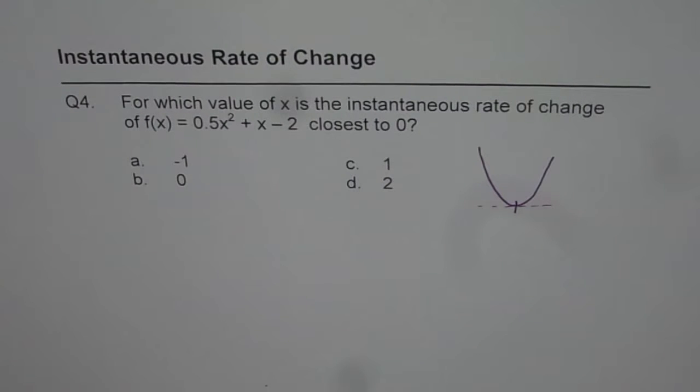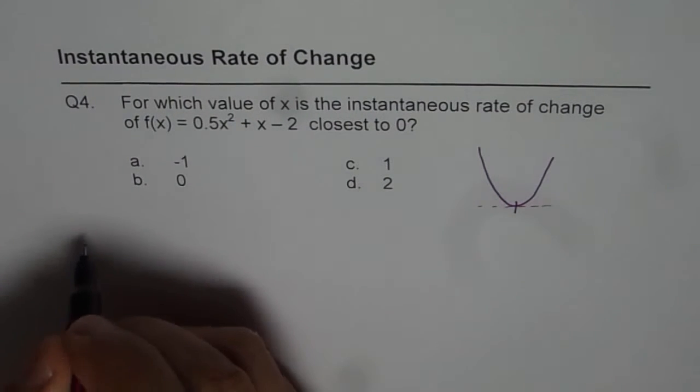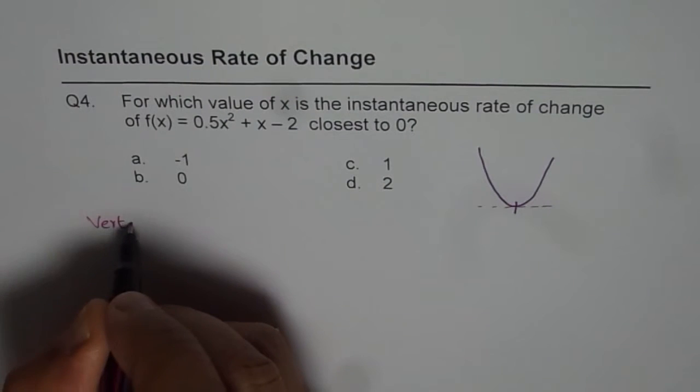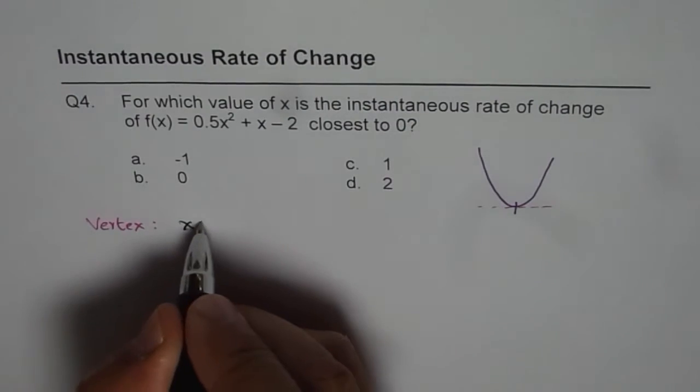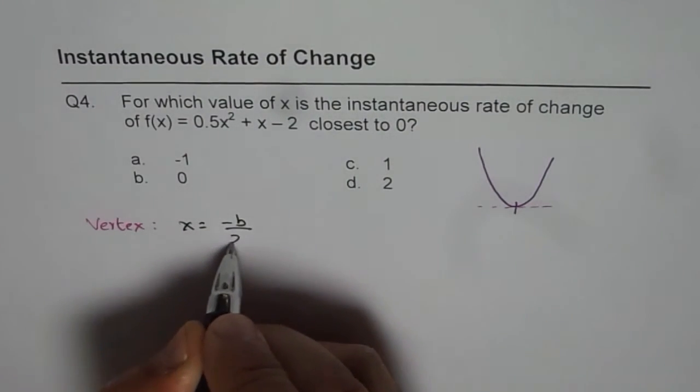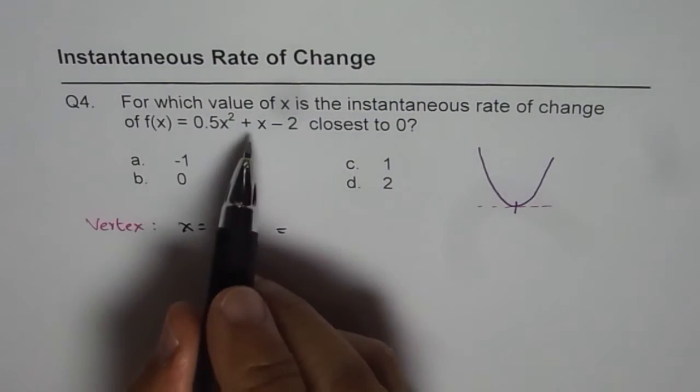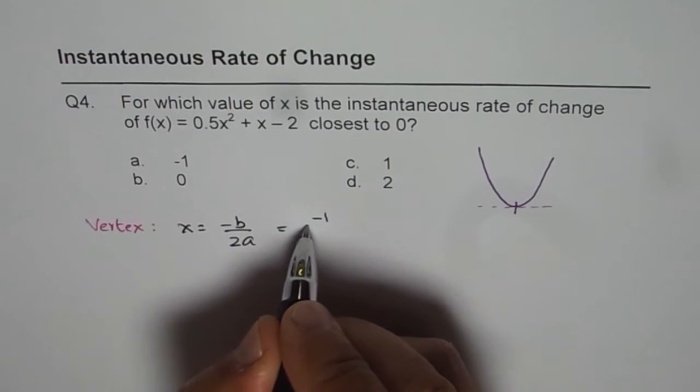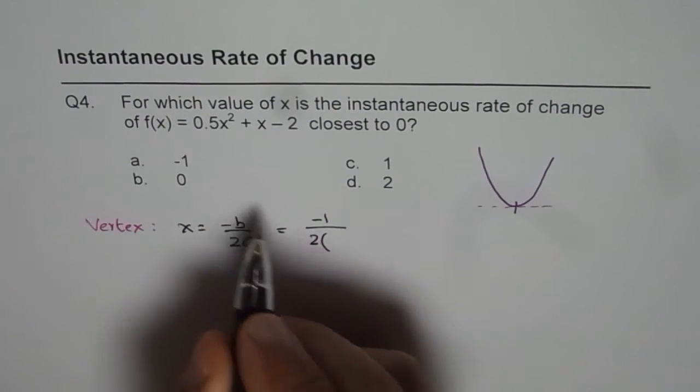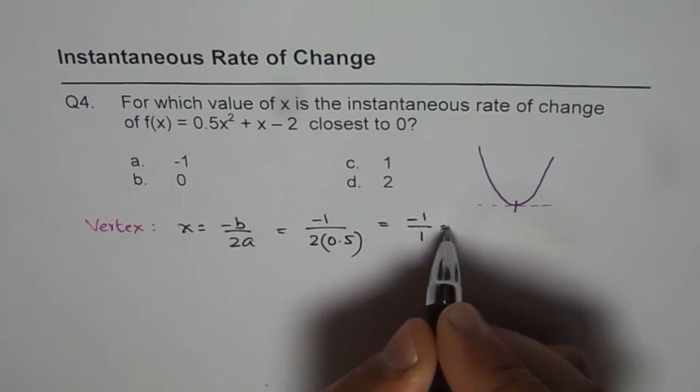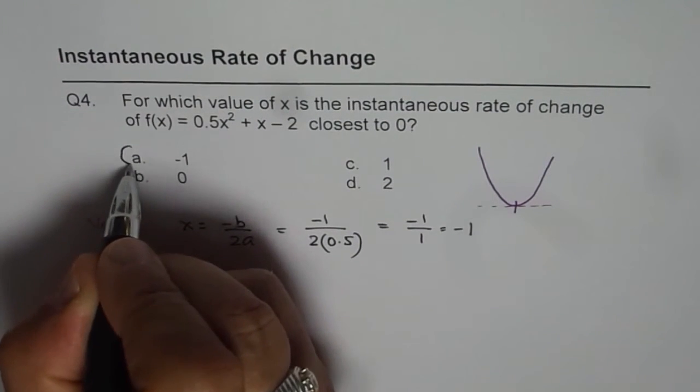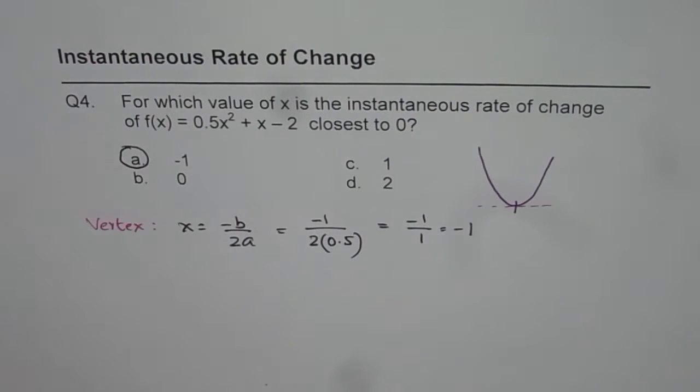So one method is you can find the vertex. To find vertex we know x = -b/(2a) and for this question b is 1. So we have -1 divided by 2 times a which is 0.5. So if I do that I get -1 over 1 which is -1, and so the choice is a. So that is one way of getting your answer.